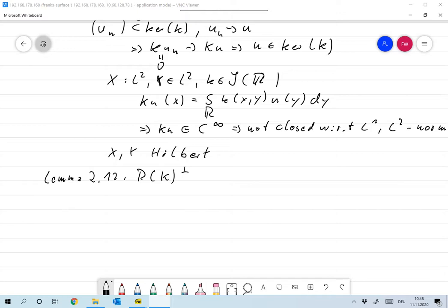range of K perp is the same as the kernel of K star, the adjoint of K, which I defined in the last lecture.